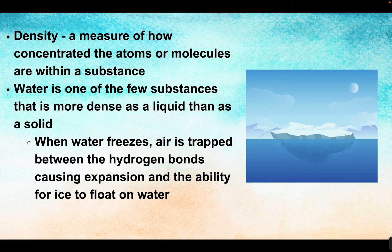This allows ice to float on water. Think about what would happen if all the glaciers and ice melted and sank to the bottom — sea levels would be far higher with much less land to live on. Also, organisms that live on the ice, like polar bears, need those ice landscapes in order to survive and hunt. They're not living in the water; they need to live on the ice and have access to the water. This ability for ice to float really does help our entire planet and make life possible for many different organisms.